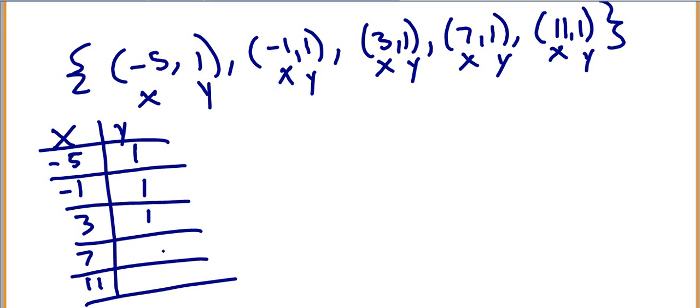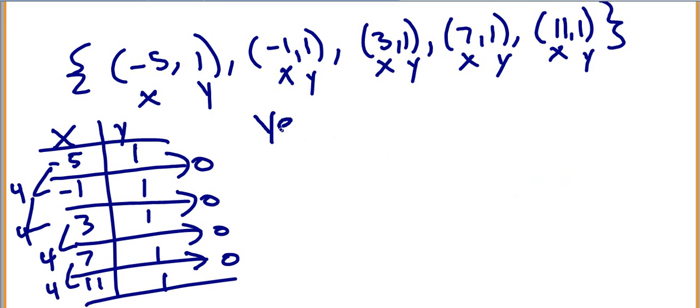Okay, so the constant difference there is 0. Here, the difference is going to be 4, right? The difference is 4, the difference is 4, the difference is 4. So yes, this is linear.